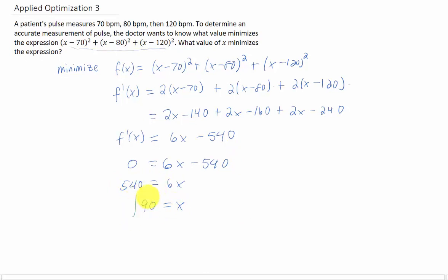Now if we say that this patient's pulse is 90, that minimizes this measurement up here. If you want to know more about where this formula came from, you can Google sum of squares errors. But that's going to do it for this problem.